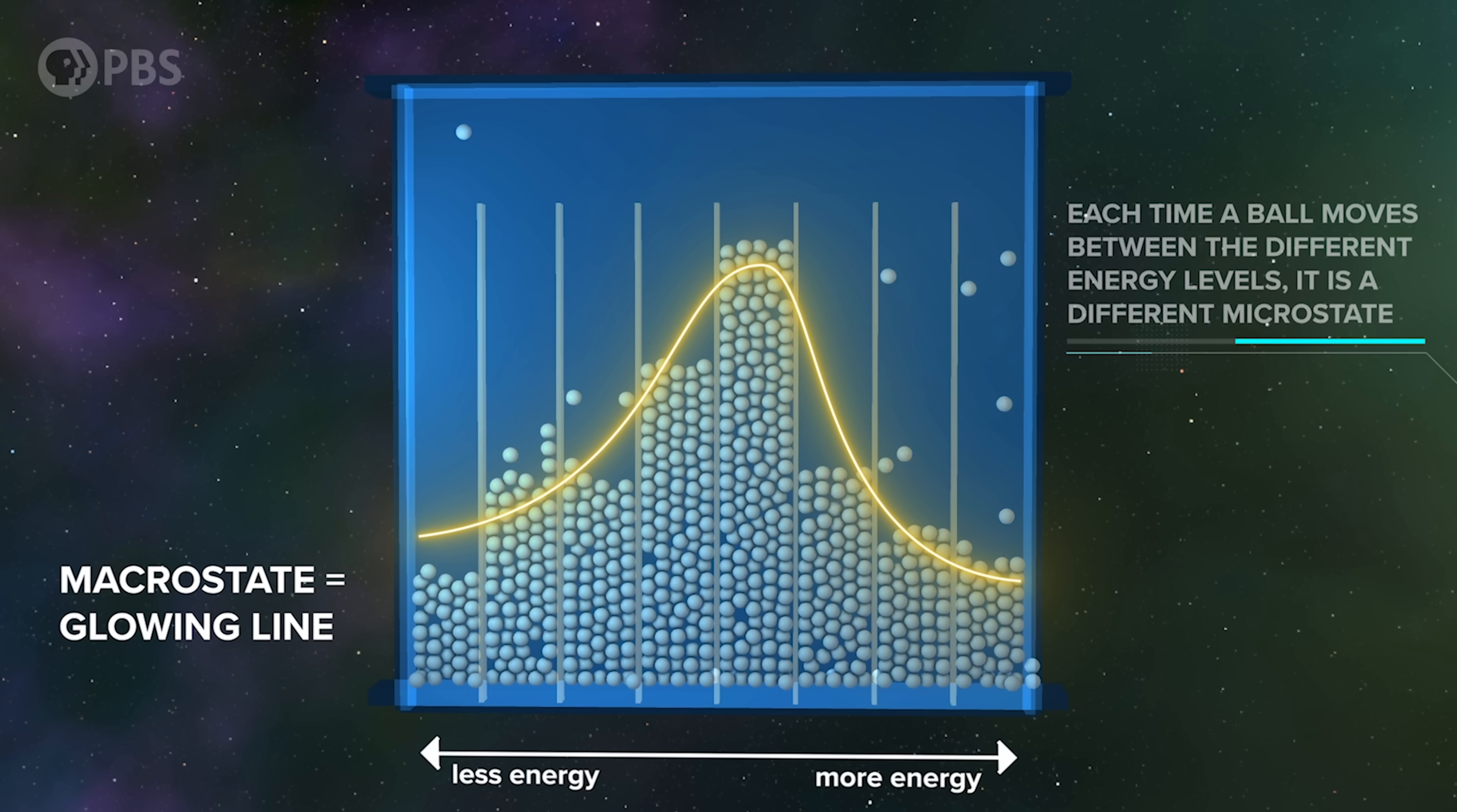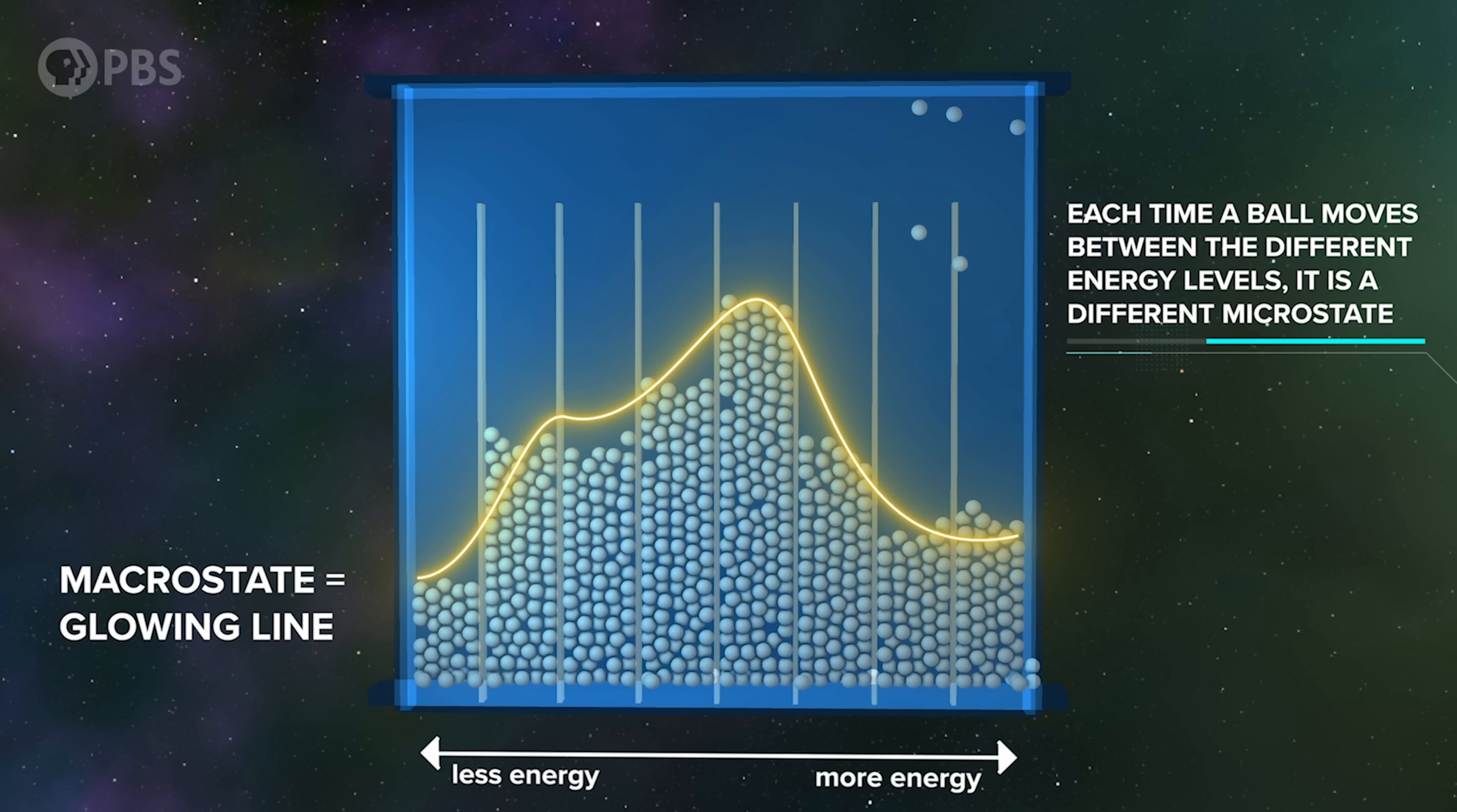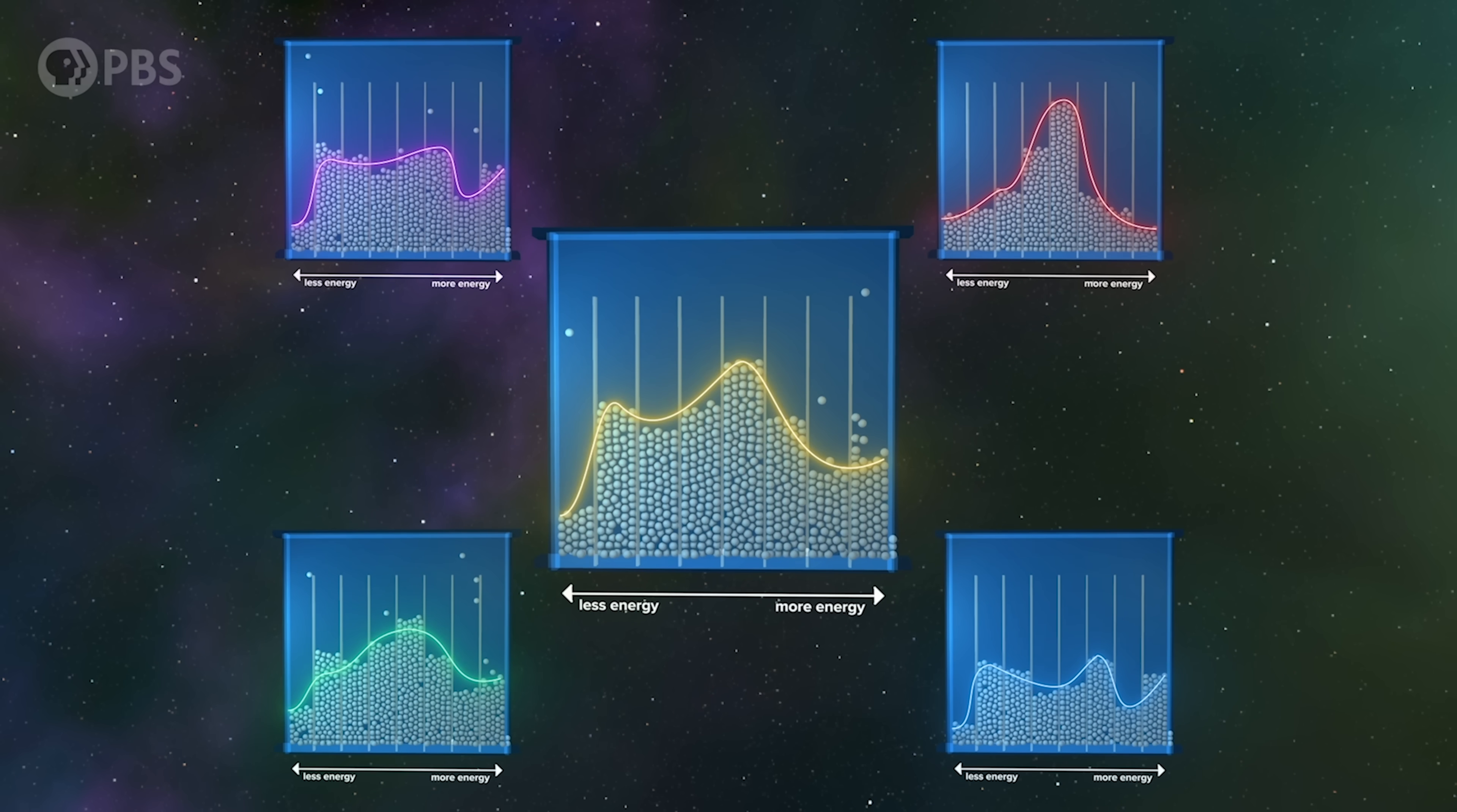Each specific distribution of energies is again a microstate, while the macrostate is a particular shape of the overall energy distribution. For example, these are different macrostates. And again, we're overwhelmingly likely to observe a macrostate and energy distribution that results from the largest number of microstates. The positions of the balls tended to become evenly distributed within the bounds of the walls of the room. The energies of the balls are also constrained, but in a different way. And so the distribution of energies is not flat across all possible energies.